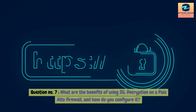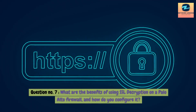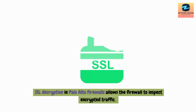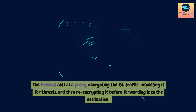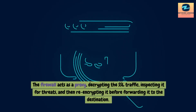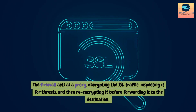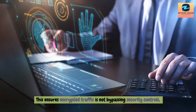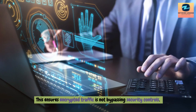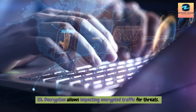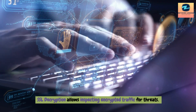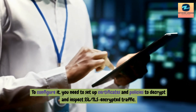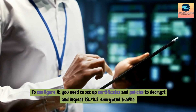Question 8: What are the benefits of using SSL decryption on a Palo Alto firewall and how do you configure it? Answer: SSL decryption in Palo Alto firewalls allows the firewall to inspect encrypted traffic. The firewall acts as a proxy, decrypting the SSL traffic, inspecting it for threats, and then re-encrypting it before forwarding to the destination. This ensures encrypted traffic is not bypassing security controls. To configure it, you need to set up certificates and policies to decrypt and inspect SSL/TLS encrypted traffic.